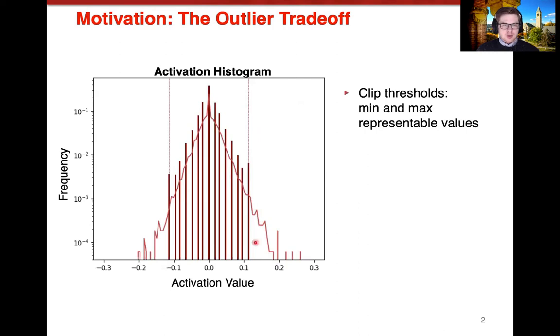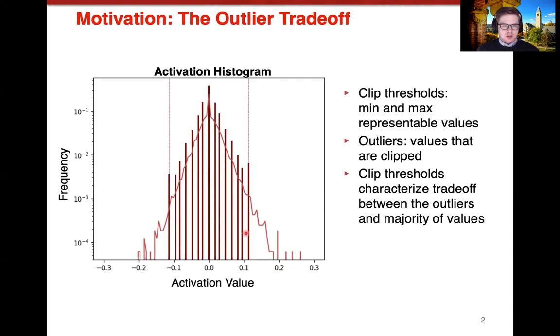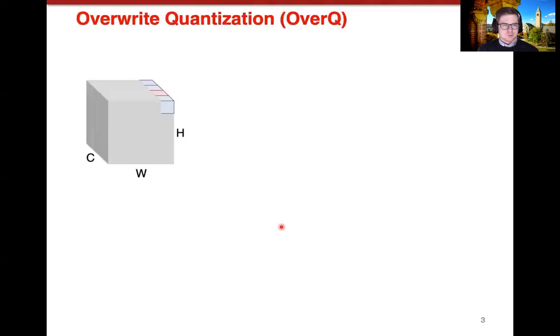The clip thresholds are the maximum and minimum representative values in the original floating point space, and we define outliers as values that are clipped based off of these clipping thresholds. These clip thresholds characterize the trade-off between the outliers and the majority of the values. For example, if this clip threshold was increased, you would get a better representation on the majority of outliers, but then you would trade off because these lines would spread apart and you get a worse representation on the majority of these values here. Since it's a centralized distribution, there are many more values in the center close to zero. And just to point out that these are activation values, so they are determined only at runtime.